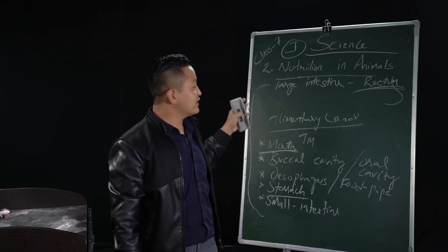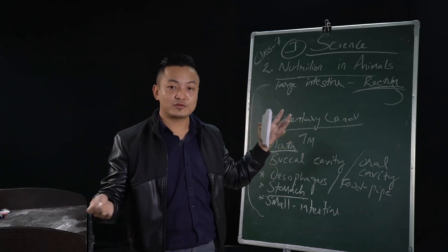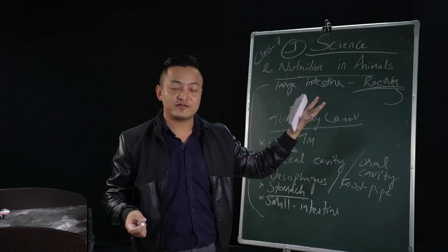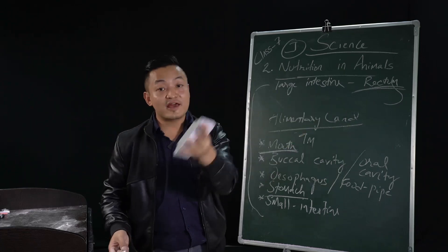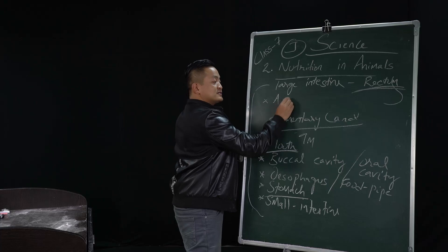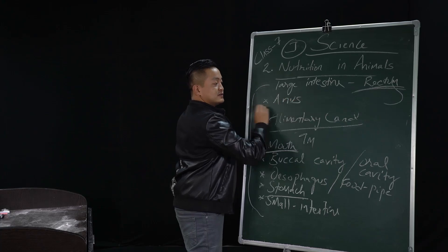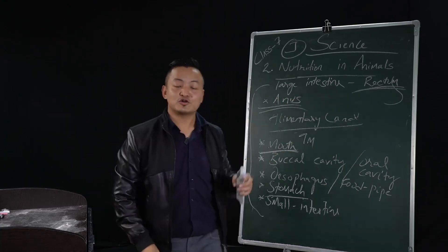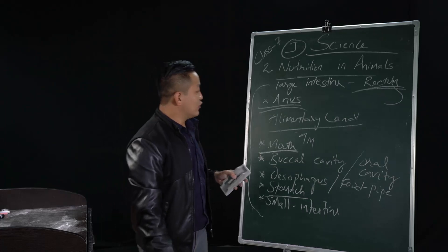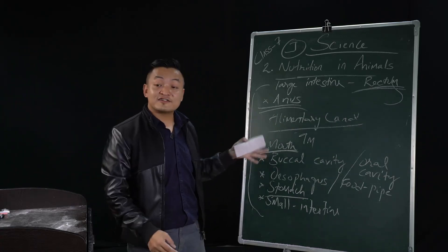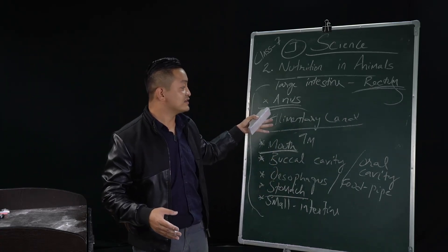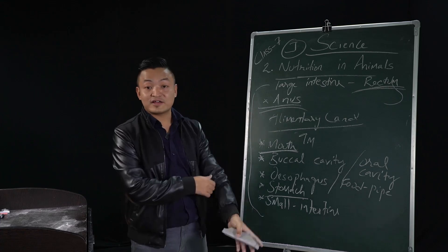And then the last part — where will the canal end? The alimentary canal starts from the mouth and buccal cavity, and will end in the anus, where all the waste is thrown out. These are the organs present in the alimentary canal.